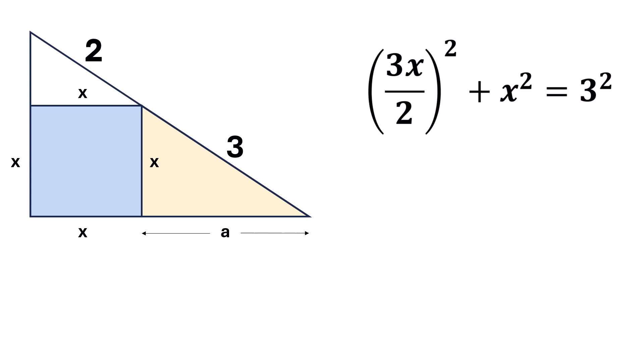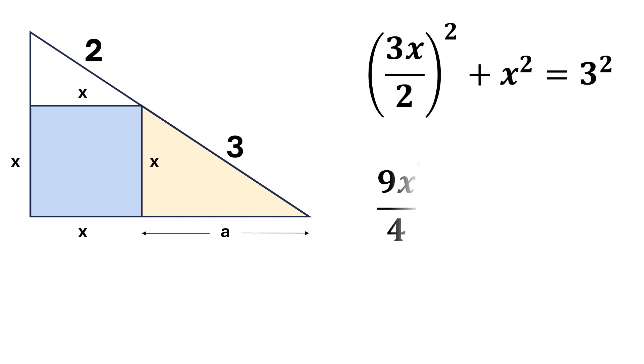Simplifying this, 9x squared over 4 plus x squared is equal to 9. Now, let's multiply both sides of the equation by 4 to eliminate the fraction. We get 9x squared plus 4x squared is equal to 36.